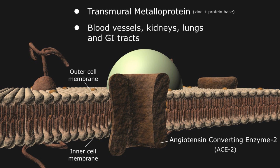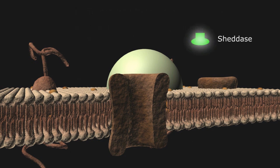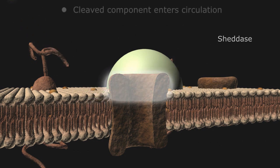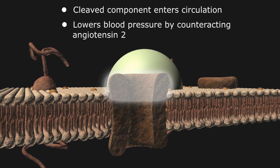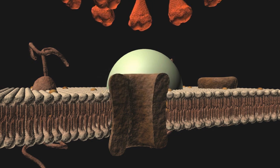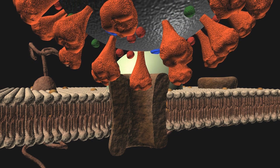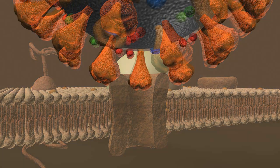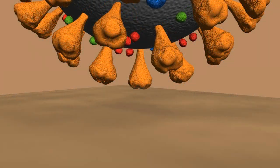Normally, an enzyme called SHED-ACE cleaves the external portion of the metalloprotein, which then enters the circulation and lowers blood pressure by counteracting the effects of a hormone called angiotensin-2. Once the spike receptor protein on the coronavirus attaches to the ACE2 site, the virus can then invade the host cell.